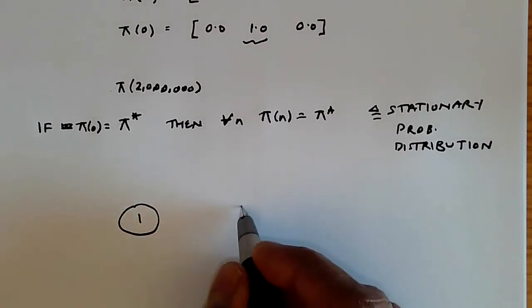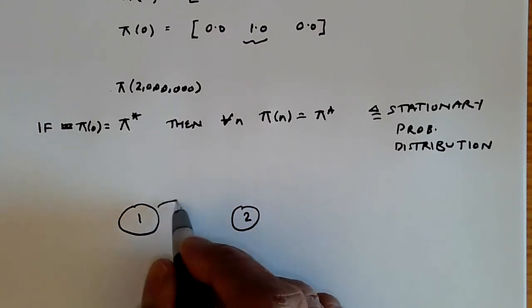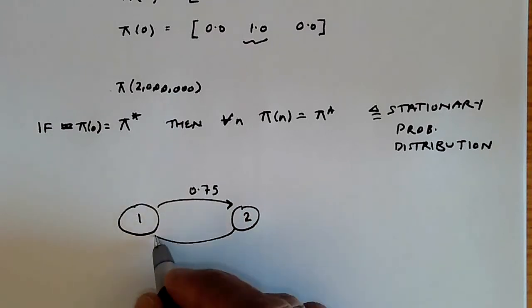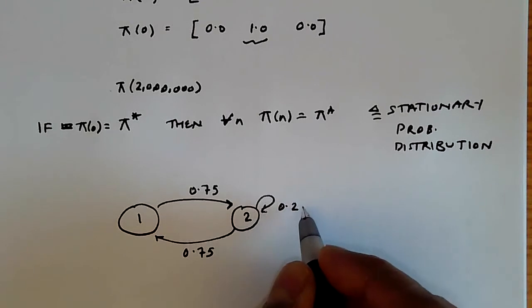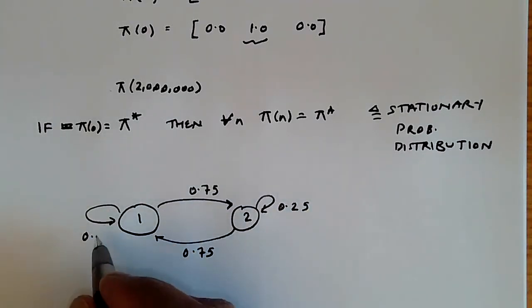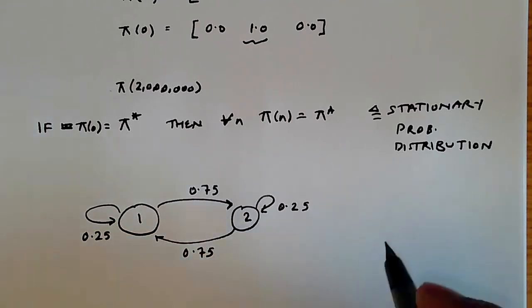It only has two states, 1 and 2. And I've chosen these transition probabilities quite carefully to be very symmetric. So you have probability of 0.25 of transition to the other state, 0.75 of being in the same state.